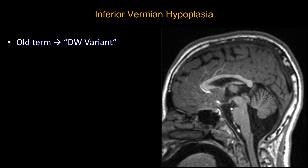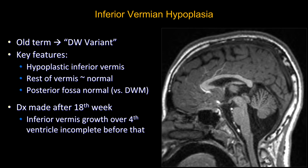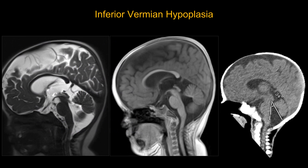When you have a widened TV angle, you would also expect the fastidium to be abnormally turned upwards. So this is inferior vermian hypoplasia — previously referred to as Dandy Walker variant, a term we now discourage. Importantly, this diagnosis should not be made before the 18th gestational week, because prior to that, inferior vermis growth over the fourth ventricle is incomplete, and incomplete covering of the fourth ventricle is a normal finding before 18 weeks.